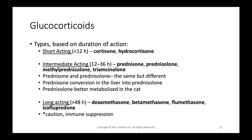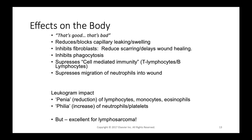Long-acting glucocorticoids last greater than 48 hours and include dexamethasone, betamethasone, flumethasone, and isoflupredone. These are generally used in higher doses for immune suppression in autoimmune diseases requiring immediate intervention. Most often administered as injectables — IV or subcutaneous. They are commonly used for severe allergic or anaphylactic reactions, often alongside Benadryl, with dexamethasone being the most typical choice.